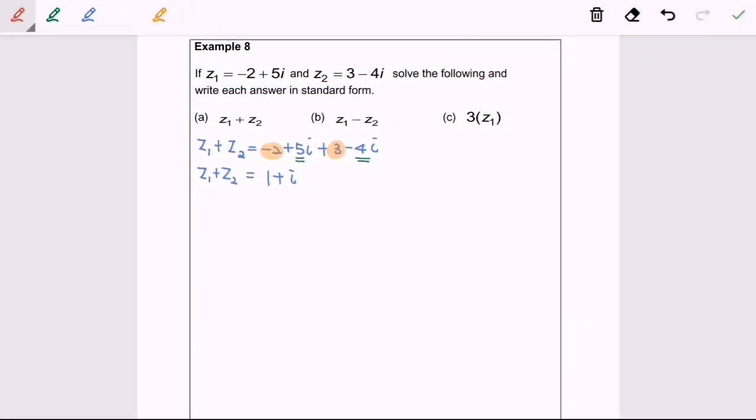Now we are going to refer to example 8b. We have z sub 1 minus z sub 2, which equals negative 2 plus 5i minus z sub 2, which is 3 minus 4i.